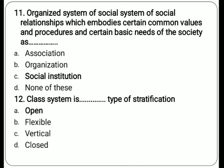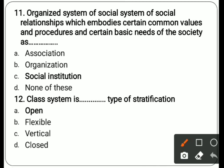Eleventh question: organized system of social relationships which embodies certain common values, procedures, and basic needs of the society is called dash dash. Options are association, organization, social institution, none of these. Correct answer is social institution — people come together with common goals and values and work toward achieving them.